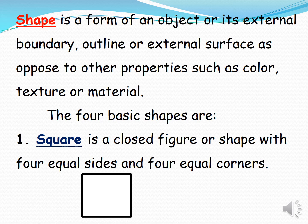Number one, square is a closed figure or shape with four equal sides and four equal corners.